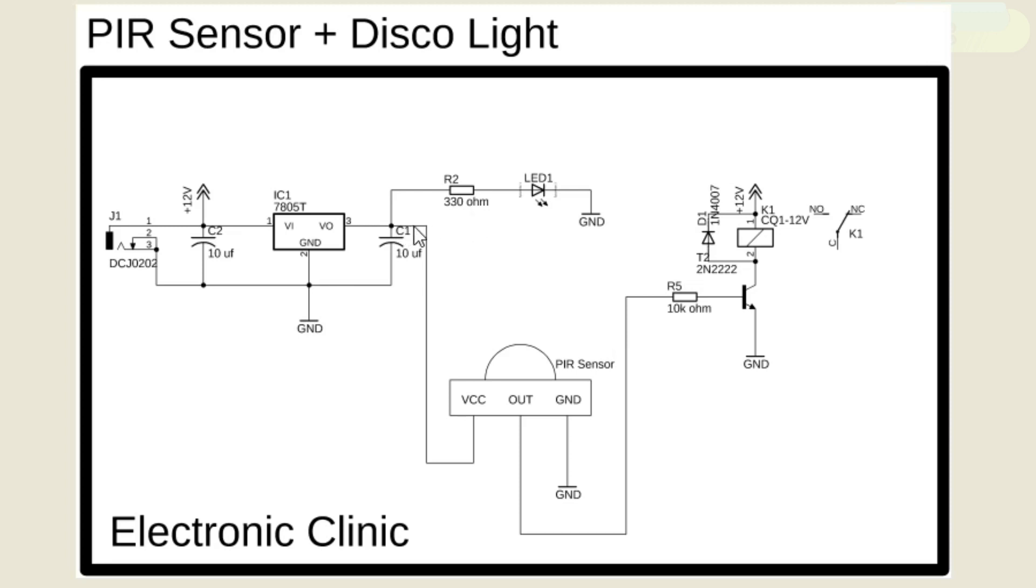A wire from the output of the voltage regulator is connected with the VCC pin of the PIR sensor module. And also make sure you connect the ground of the voltage regulator with the ground of the PIR sensor module.